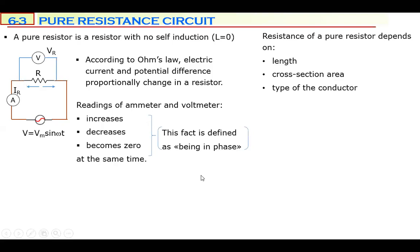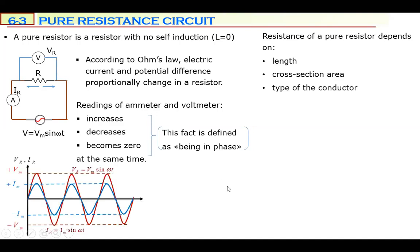The readings of the voltmeter and ammeter increase together, decrease together, and become zero together at the same time. This fact — that voltmeter and ammeter readings change together — is explained as being 'in phase.' Electric current and potential difference on a resistor are in phase: zero together, maximum together, decreasing together.